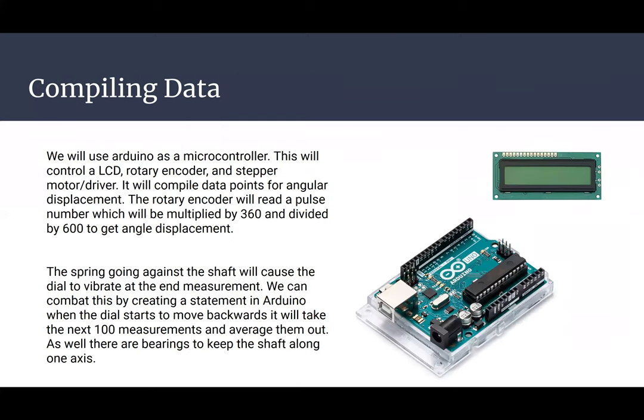In order to compile data, we will be using Arduino as our microcontroller, which will control an LCD display, a rotary encoder, and a stepper motor driver. It will compile data points for the angular displacement. When the spring torque is equal to the torque from the rotating aluminum cup, the rotary encoder will read a pulse number, which will be multiplied by 360 and divided by 600 to get angular displacement. The spring going against the shaft will cause the dial to vibrate at the end measurement. We can combat this by creating a statement in Arduino. When the dial starts to move backwards, it will take the next 100 measurements and average them out. As well, there are bearings to keep the shaft along one axis.